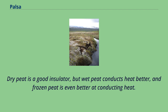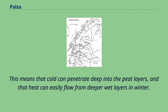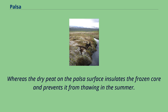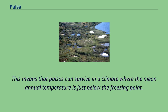Dry peat is a good insulator, but wet peat conducts heat better, and frozen peat is even better at conducting heat. This means that cold can penetrate deep into the peat layers, and that heat can easily flow from deeper wet layers in winter, whereas the dry peat on the palsa surface insulates the frozen core and prevents it from thawing in the summer. This means that palsas can survive in a climate where the mean annual temperature is just below the freezing point.